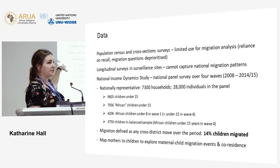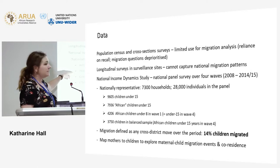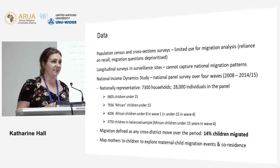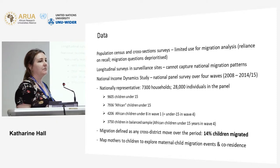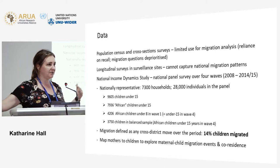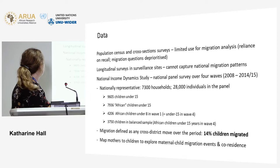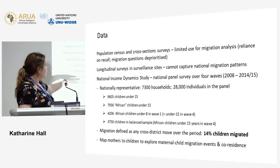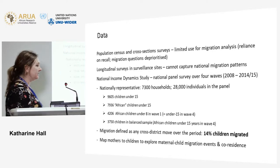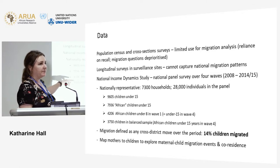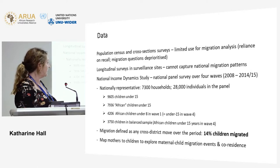At baseline, the NIDS is a nationally representative sample of 7,300 households and nearly 30,000 individuals, of whom 9,600 are children under 15. I restricted the sample to African children under 16, partly because I'm interested in children in the context of historic discriminatory legislation — including everyone would introduce confounding patterns, as wealthy people migrate for very different reasons. I also restricted to children under 8 in wave 1 so they could still be under 15 in wave 4. After accounting for some attrition, this left a balanced panel of 3,750 children.